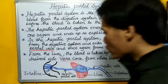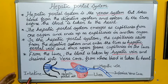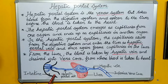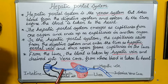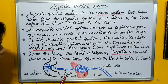Diagrammatically, if we want to understand the hepatic portal system, it shows here that the hepatic portal system emerges as capillaries from the intestine — which represents the digestive system — and it moves into the liver as the hepatic portal vein.